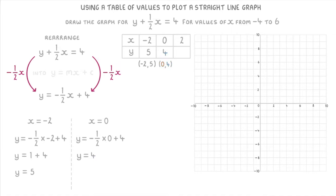And finally, if we plug in x equals 2. We get y equals minus 1 half times 2 plus 4. Which is y equals minus 1 plus 4. And so y equals 3. Giving us the coordinate 2, 3.